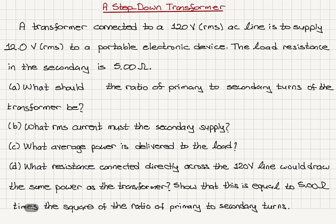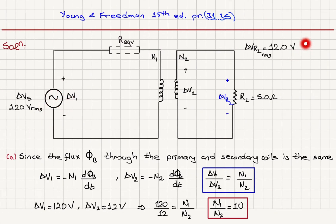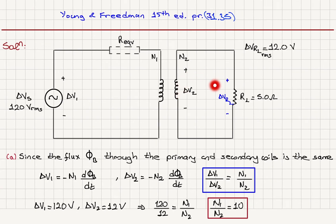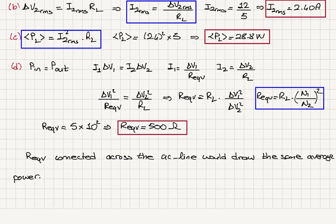In summary, we looked at a step-down transformer: 120V RMS input converted to 12V RMS output. Since the flux through the primary and secondary coils in an ideal transformer is the same, using Faraday's law the ratio of voltages equals the ratio of turns, which is 10 here. With a 5 ohm load on the secondary, the voltage across the load is 12V, so 12 divided by 5 gives 2.4 amps RMS current. The power delivered to the load is I²R: 2.4 squared times 5 equals 28.8 watts.